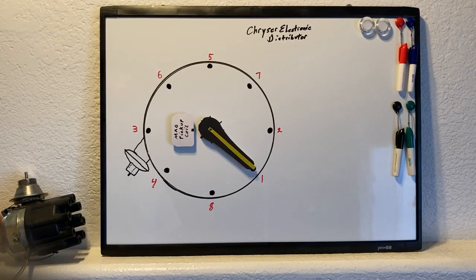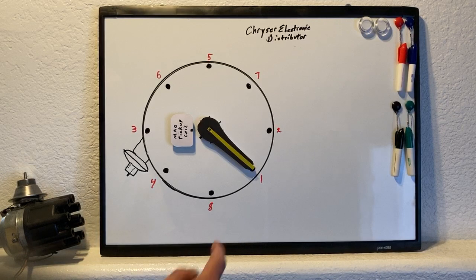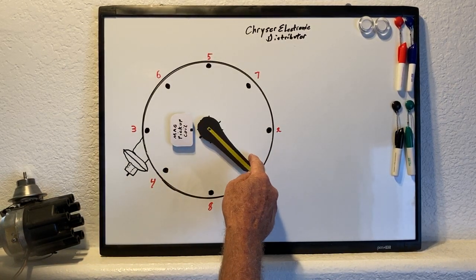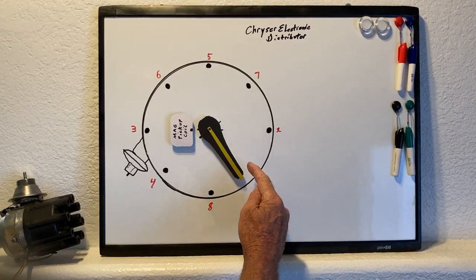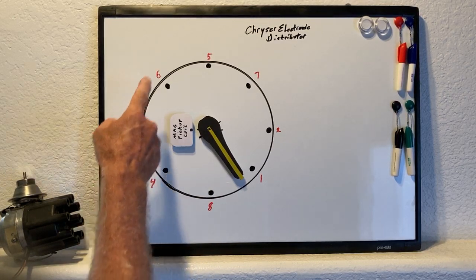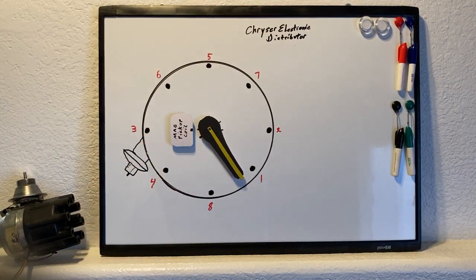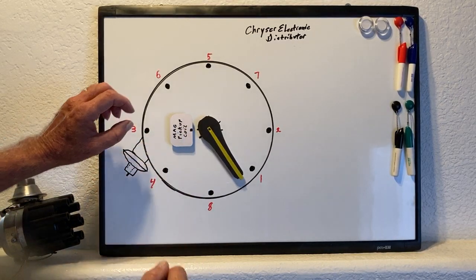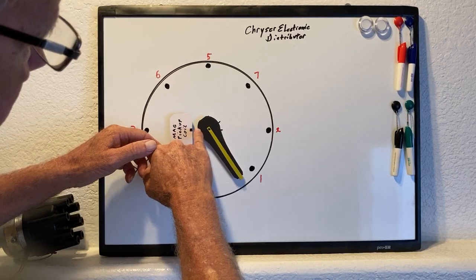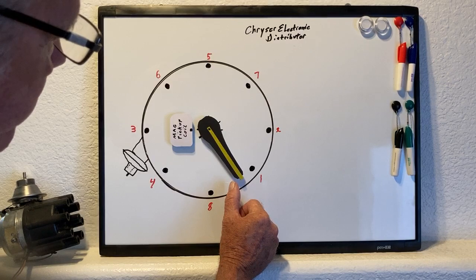What happens is the rotor turns as the engine's turning. On a small block Mopar, the rotor turns clockwise. It fires cylinder number one, then cylinder number eight, then cylinder number four, and so on all the way around as these little points line up to the pickup coil. The phasing is off on a distributor when you see the lineup of the pickup coil and the reluctor vane right there.